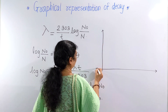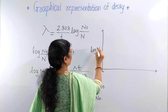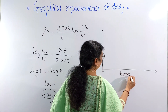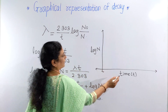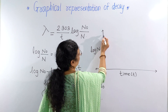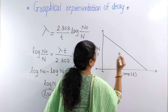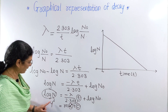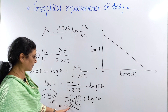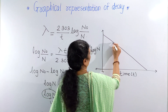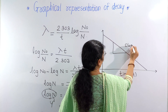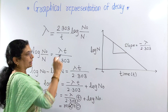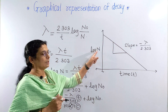If you plot log of N (the quantity remaining after time t) on the y-axis against time t on the x-axis, you get a straight-line graph. The slope m equals minus lambda upon 2.303, from which you can calculate the value of lambda. Remember, N is the quantity remaining after time t.